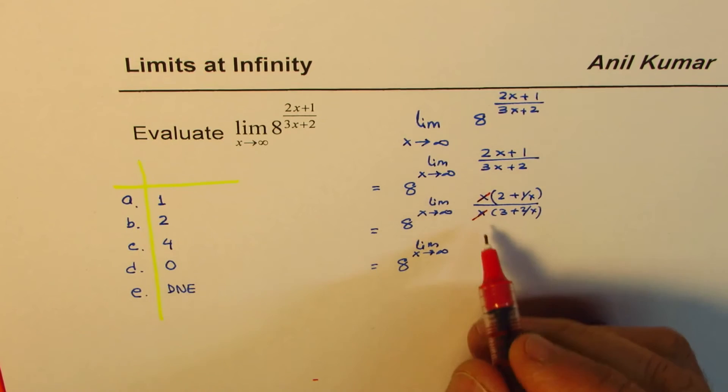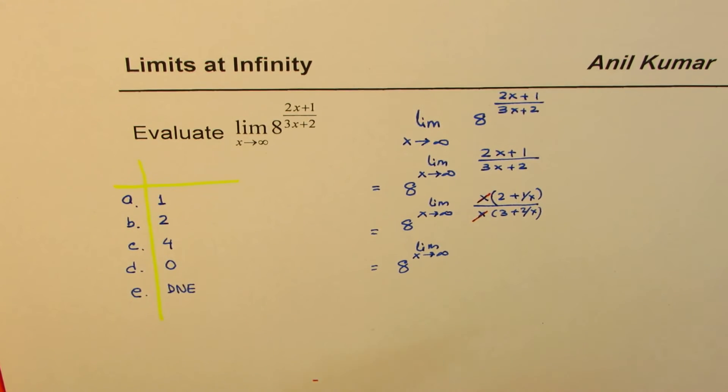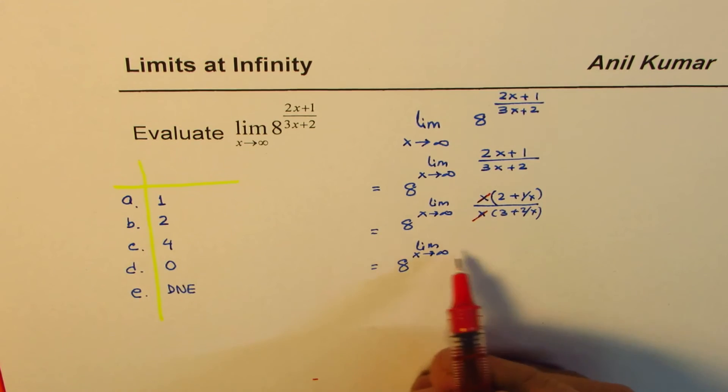Now, we say that limit of 2 is constant. Limit of 2 is constant. So you could actually, it becomes too cumbersome to write here.